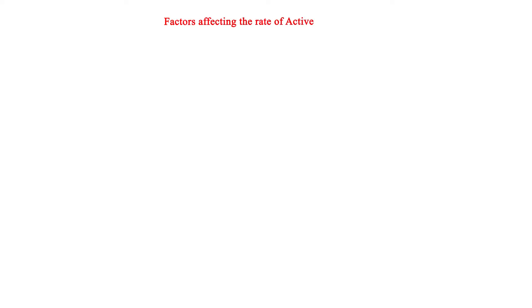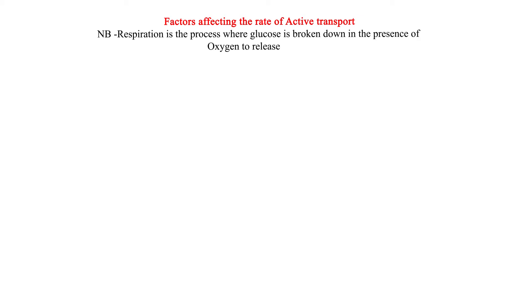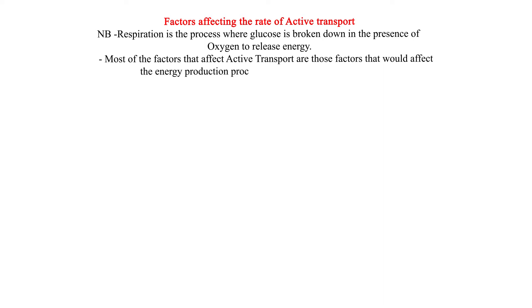Factors Affecting the Rate of Active Transport. Respiration is the process where glucose is broken down in the presence of oxygen to release energy. Most of the factors that affect active transport are those factors that would affect the energy production process in living cells. They include the following.